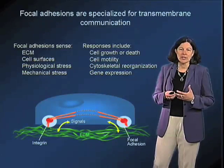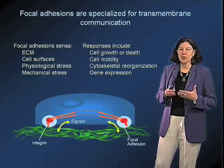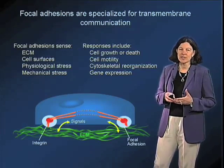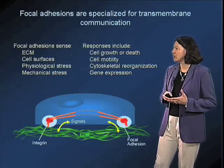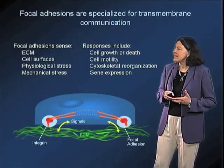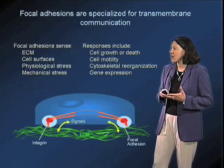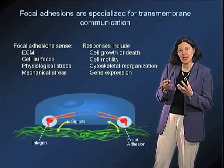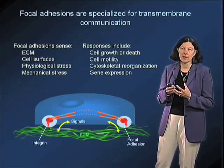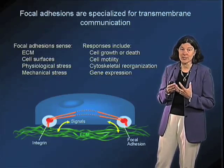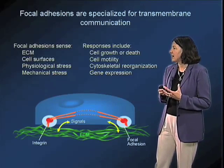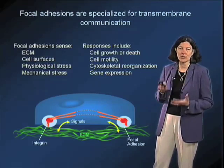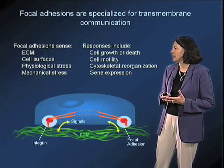Extracellular matrix interaction occurs at specialized zones of the cell surface, which in cultured cells are called focal adhesions. These focal adhesions, as we discussed last time, are areas that are rich in integrin adhesion receptors, and they are playing a really important role in bidirectional transmembrane communication.